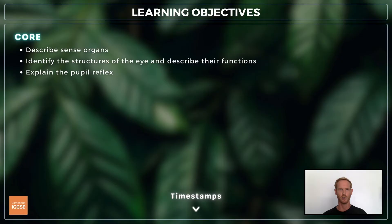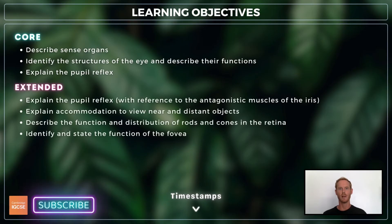For topic 14.2 you need to describe the term sense organ, identify the structures of the eye and describe their functions, and explain the pupil reflex. For extended you need to know about the muscles that control the diameter of the pupil, the two different types of light-sensitive cells, and a part of the retina called the fovea.